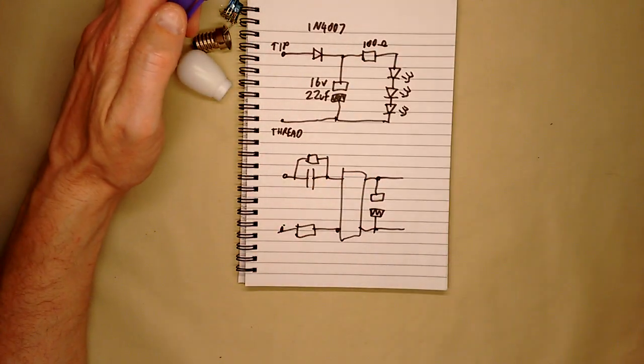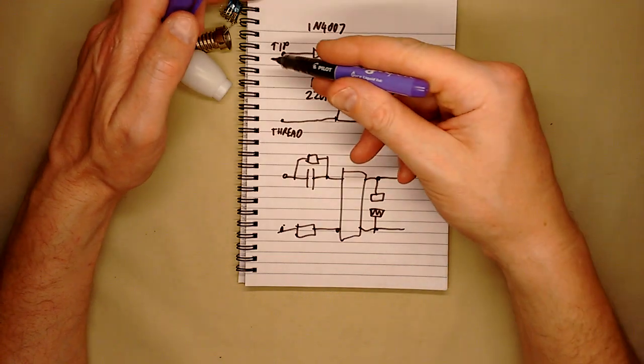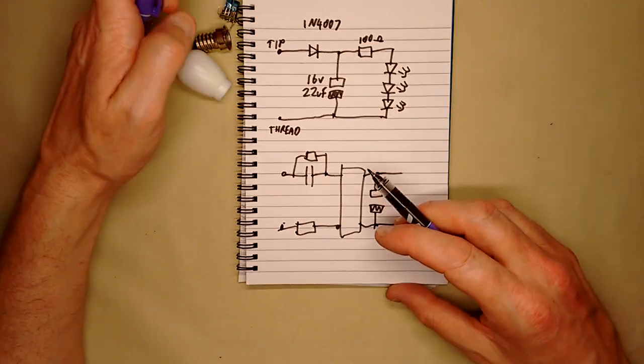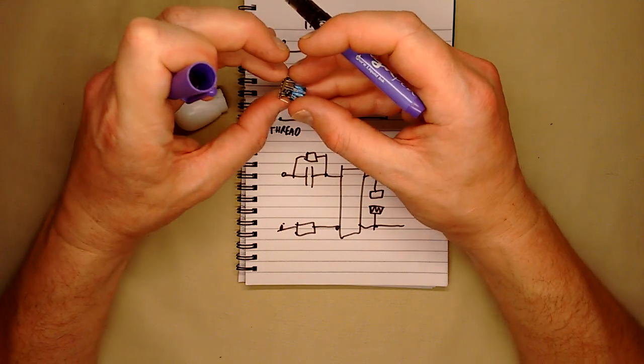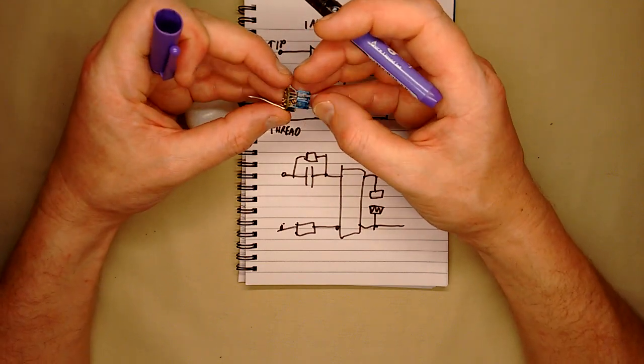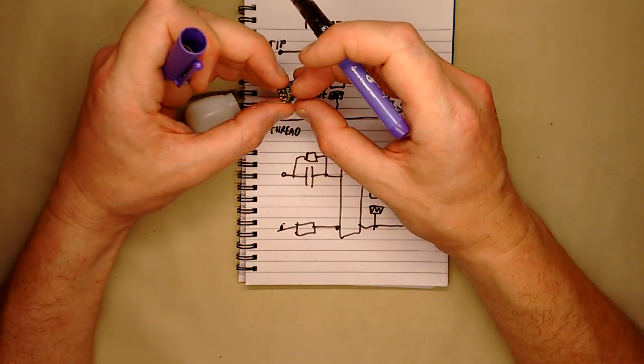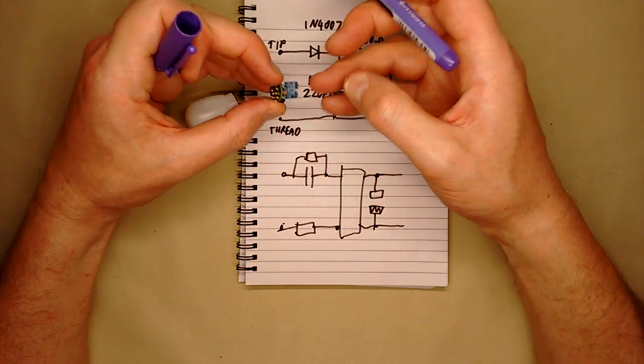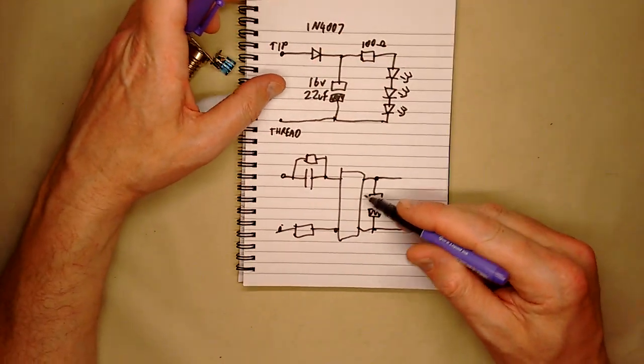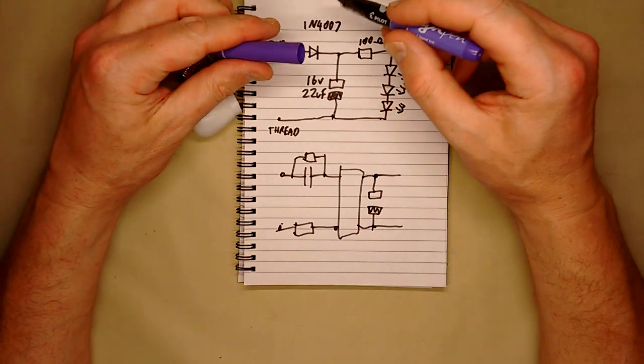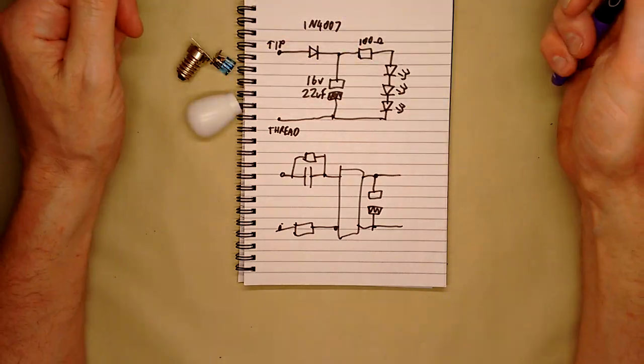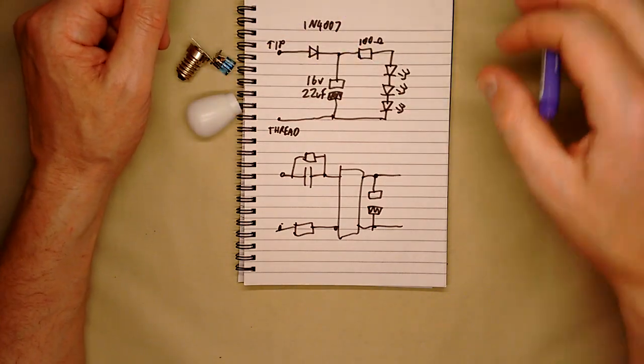And that means that this capacitor here would limit the total current the string could draw. Although the resistors would still be active, you couldn't just rectify it and smooth it because that would then give these twice the current would flow through these effectively because they're designed, the resistor's been chosen for half wave operation. But that would then limit the current and it would provide smooth DC and then they wouldn't flicker. So maybe I'll do that. I'm going to have a play around with these and just see what I can do.